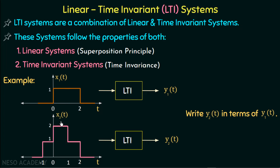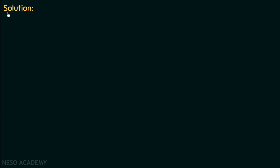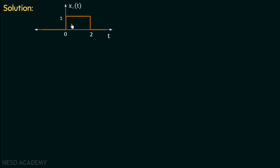There must be a relationship between x2(t) and x1(t). We are given x1(t) having a rectangular waveform from 0 to 2 — its value from minus infinity to 0 is 0, from 0 to 2 is 1, and from 2 to infinity is 0. If we time-shift this function to the left by 1, we get x1(t+1), whose waveform is a rectangular function from minus 1 to 1.